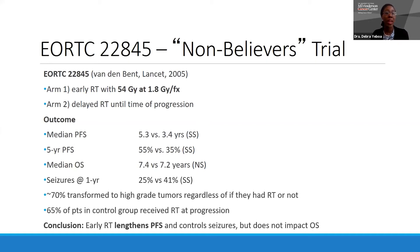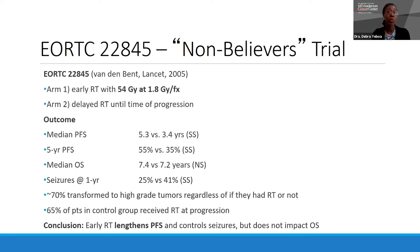It's also important to note that the transformation rate to high-grade tumors was still high for this heterogeneous cohort regardless of whether they received radiation — approximately 66% versus 72%, essentially not statistically different — so about 70% transformation to higher grade independent of radiation. This also addresses questions from patients or colleagues about whether radiation might increase transformation risk; the answer would be no. Notably, 65% of patients in the observation group actually received radiation at progression.